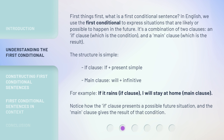The structure is simple. IF clause: IF plus present simple. MAIN clause: WILL plus infinitive. For example, 'If it rains' — IF clause — 'I will stay at home' — MAIN clause.